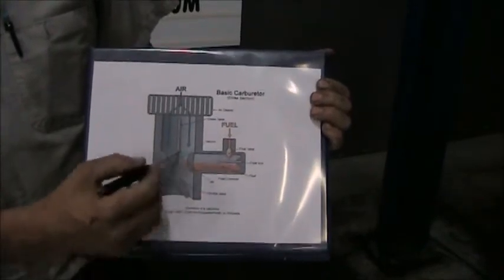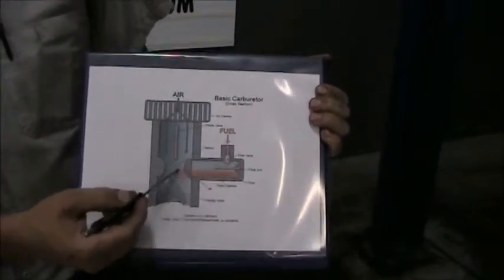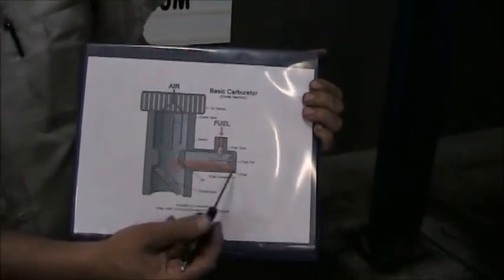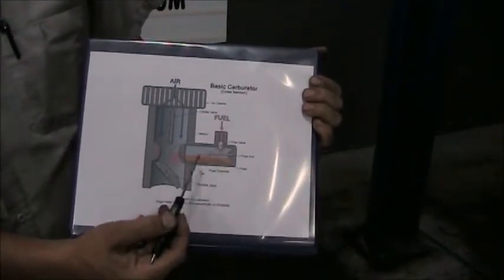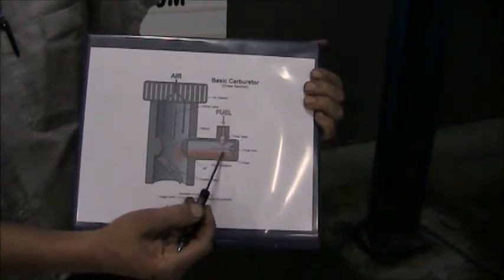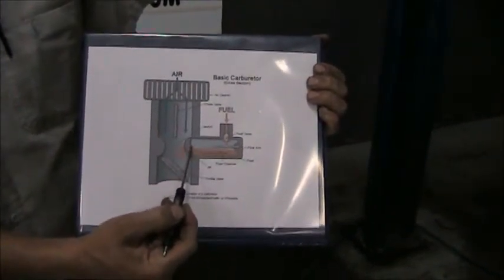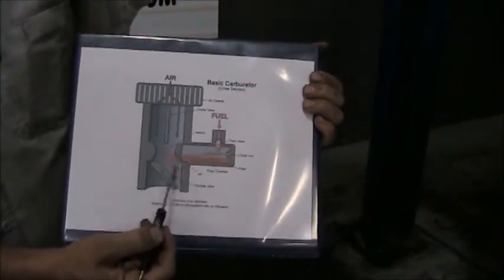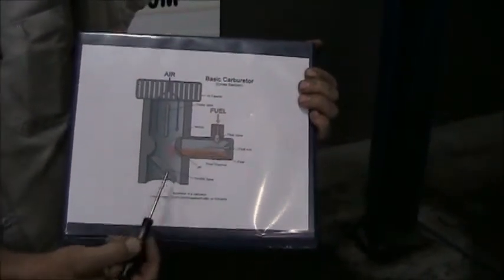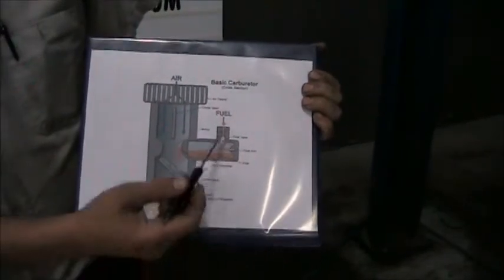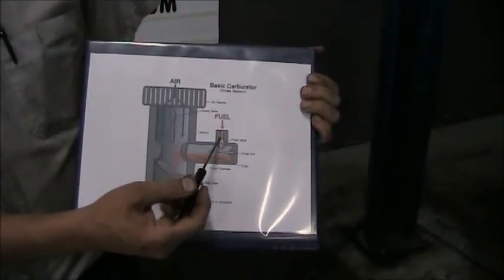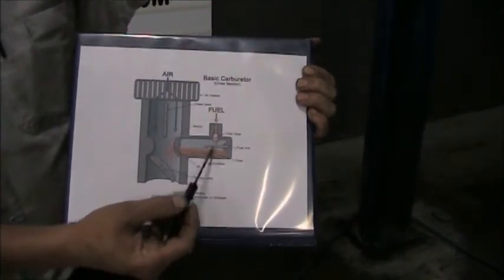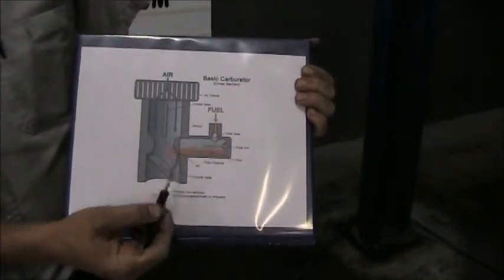That vacuum then draws fuel from the float bowl through a jet into the venturi. The more air that you flow through the venturi, the more vacuum it creates and the more fuel flows into the carburetor. Over here we have the float bowl and a float — that's what keeps the fuel level just at this line. If the fuel level was any higher, it would cause the vehicle to flood, and if it was lower, it would cause the vehicle to run lean. The fuel inlet is right here; fuel comes in through a needle valve, and then the float turns the fuel on and off to keep the level correct.